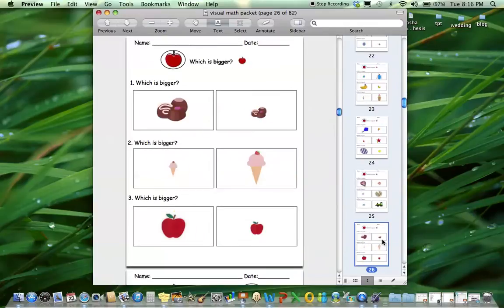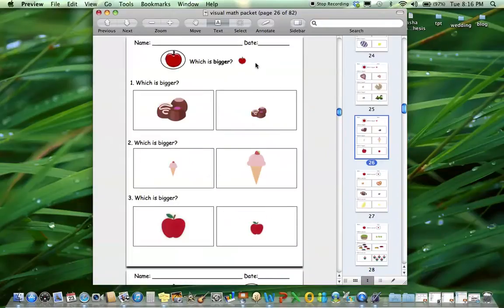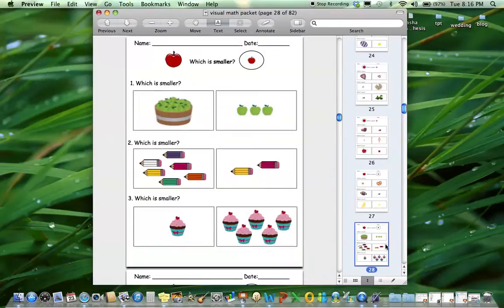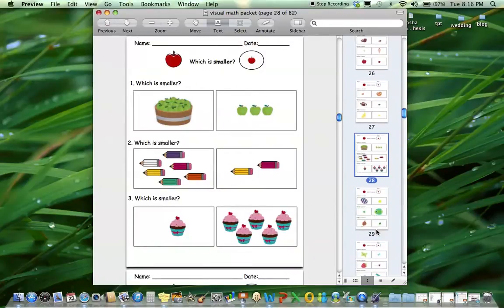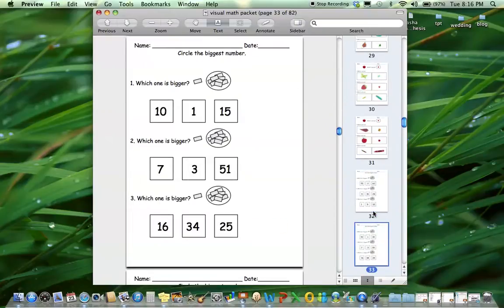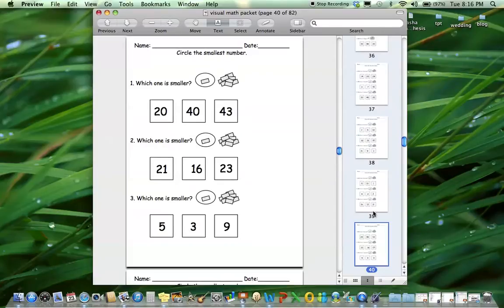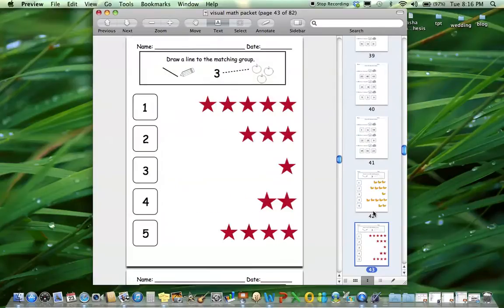And smaller, so again the visual of the bigger apple being circled for the bigger and the smaller one for the smaller. So your kids that are non-readers will still be able to access these math tasks. There's a bunch of those and then the same thing with the numbers, which is bigger and which is smaller, so kind of expanding upon that skill in a more abstract way.